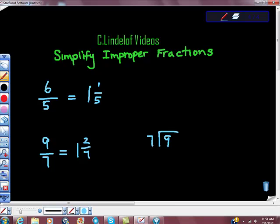What did I just do? I did 9 divided by 7, I got 1. 1 times 7 is 7. 9 minus 7 is 2. So this 2 is this one, and this 7 is this one.